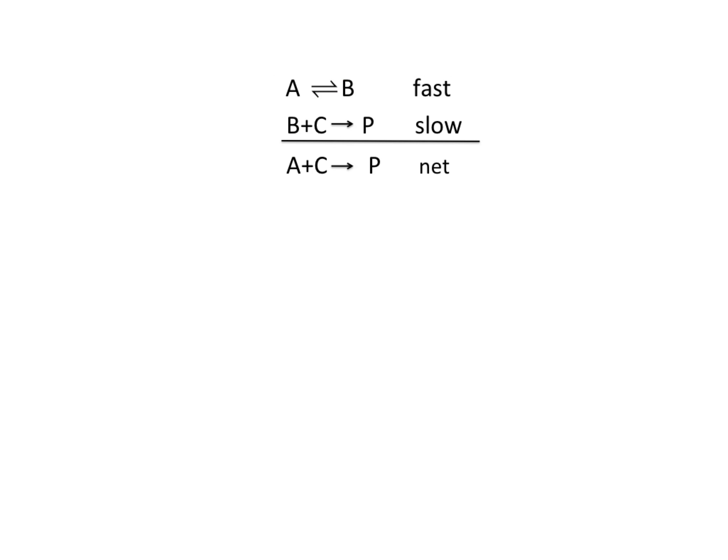So in other words the equilibrium constant for this first step is equal to the concentration of B divided by the concentration of A, and so my concentration of B will be equal to my equilibrium constant times the concentration of A. Now I have my concentration of B in terms of reactant concentrations.